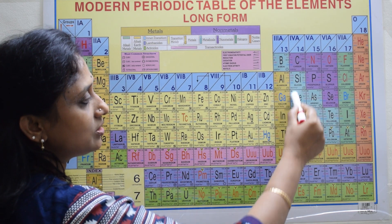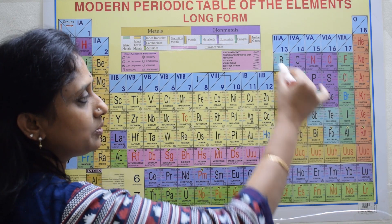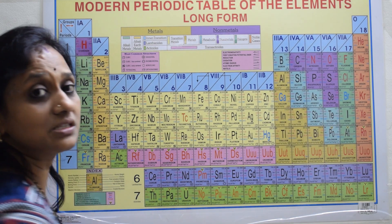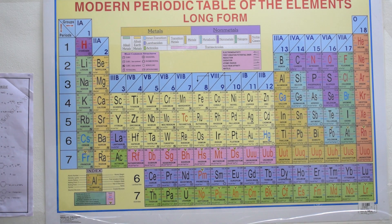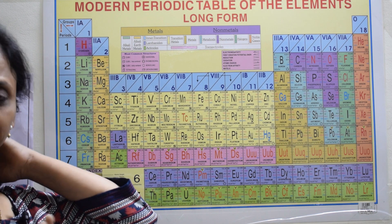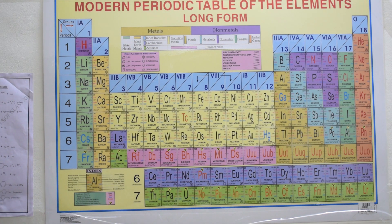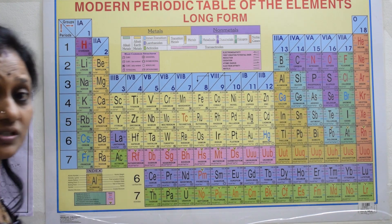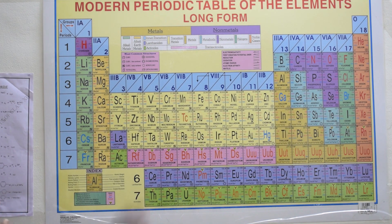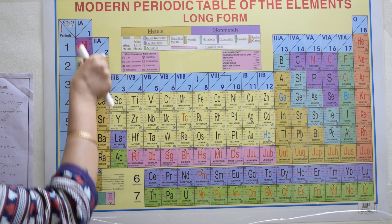Metalloids include boron, silicon, germanium, arsenic, antimony, tellurium, and polonium. These elements show both the properties of metals and non-metals. Metalloids are placed in the p-block elements.